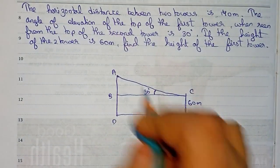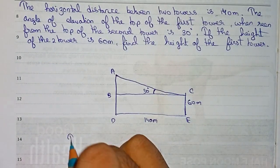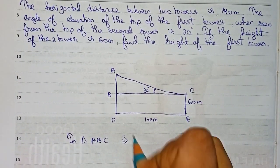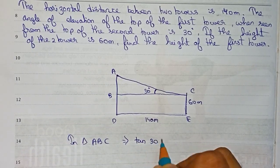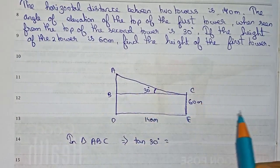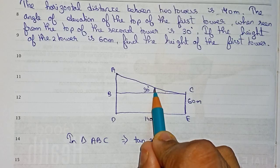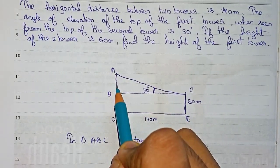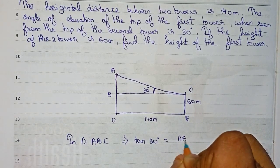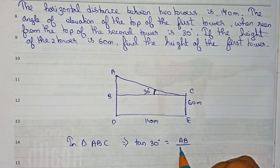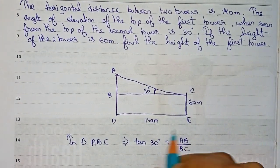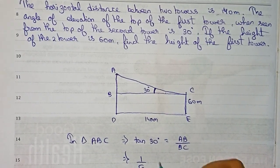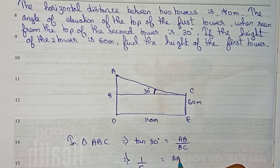Now we will take the first triangle ABC. In triangle ABC, tan 30 degrees equals height divided by base. For this angle, we are taking the value of tan. Tan is height by base, so our height is AB and our base is BC. So tan 30 equals AB by BC.